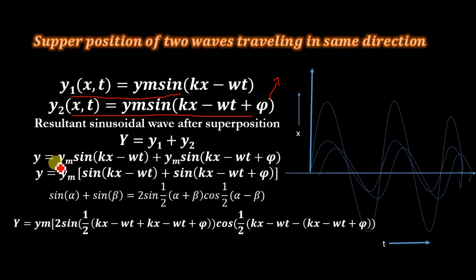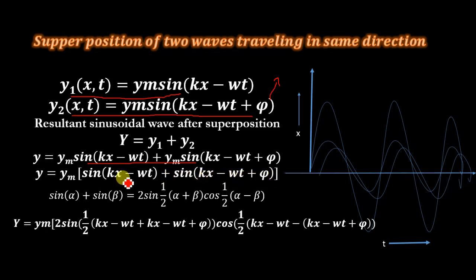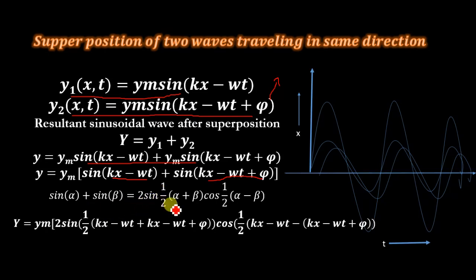The amplitude ym is common to both terms, so we take ym as a common factor. We get y = ym·[sin(kx − ωt) + sin(kx − ωt + π)]. Now, letting α = (kx − ωt) and β = (kx − ωt + π), we apply the trigonometric identity: sin α + sin β = 2·sin((α + β)/2)·cos((α − β)/2).